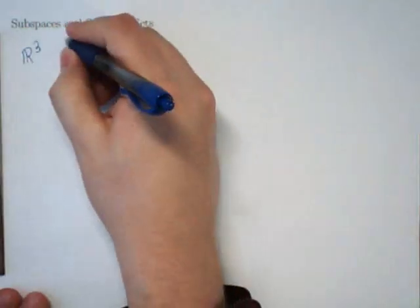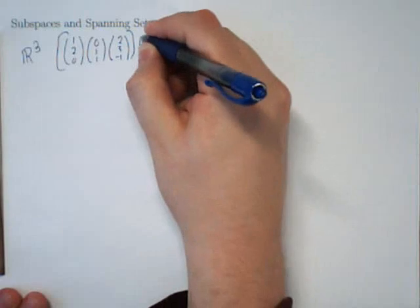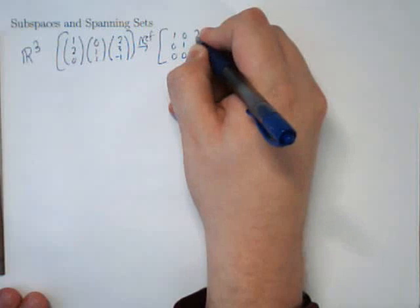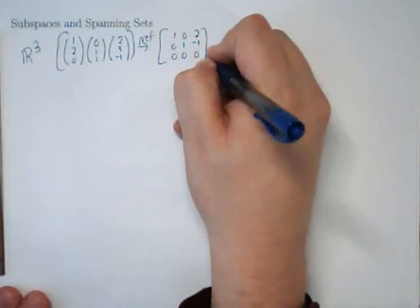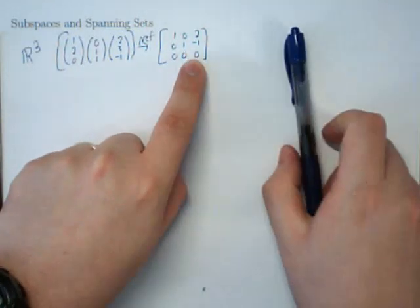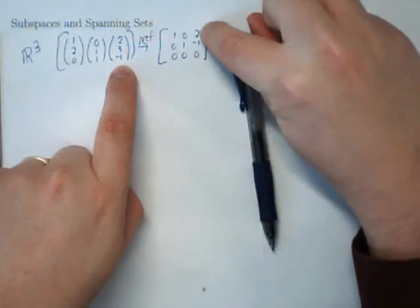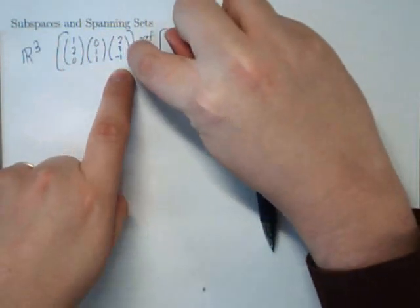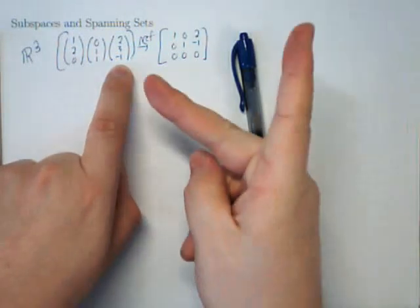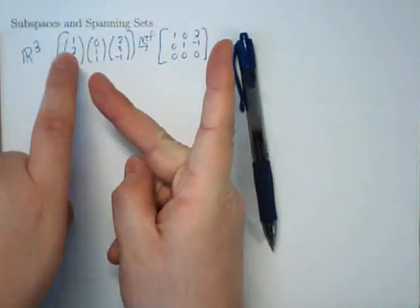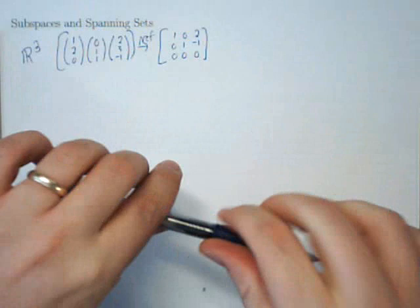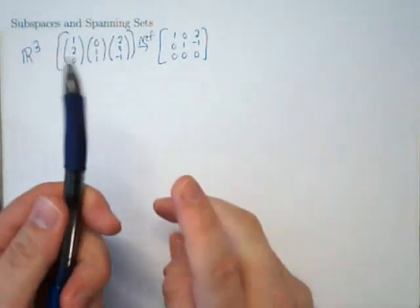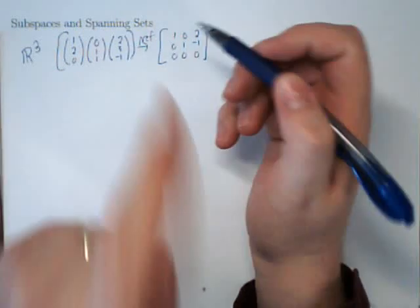If I put them in a matrix and row-reduce it, the RREF pops out as: row 1: (1, 0, 2), row 2: (0, 1, -1), row 3: (0, 0, 0). This third column tells me that the third vector is twice the first minus one of the second — precisely that third vector. So once I have these two vectors, the third vector is already in the plane spanned by those two, which means the third vector doesn't really add anything new.